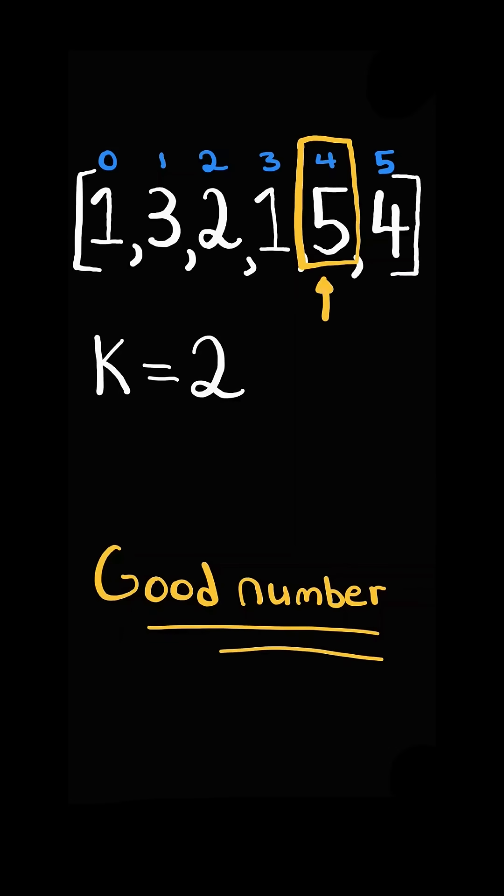a number is considered good if it's greater than the number at index i plus k, if it exists, and it's greater than the number at index i minus k.